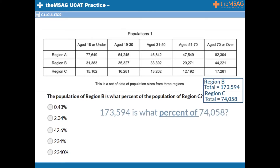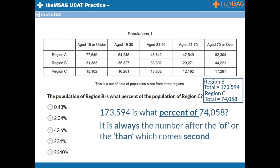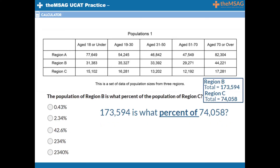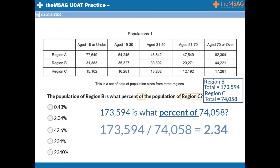173,594 is what percent of 74,058? We simply divide the two numbers. If you are confused about which way round to divide, it is always the number after the 'of' or 'than' which comes second. The question asked: the population of region B is what percent of the population of region C? Region C came second — after the 'of' — so its population goes second in the calculation. 173,594 divided by 74,058 gives us 2.34. Multiply by 100 to make this a percentage, and the answer is 234%, to the nearest whole number.